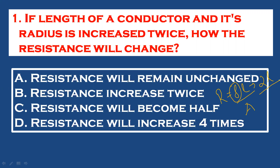Radius is equal to 2 times the original. Since area = πR², and radius is doubled, area will become 4 times. So the new area is equal to 4A.